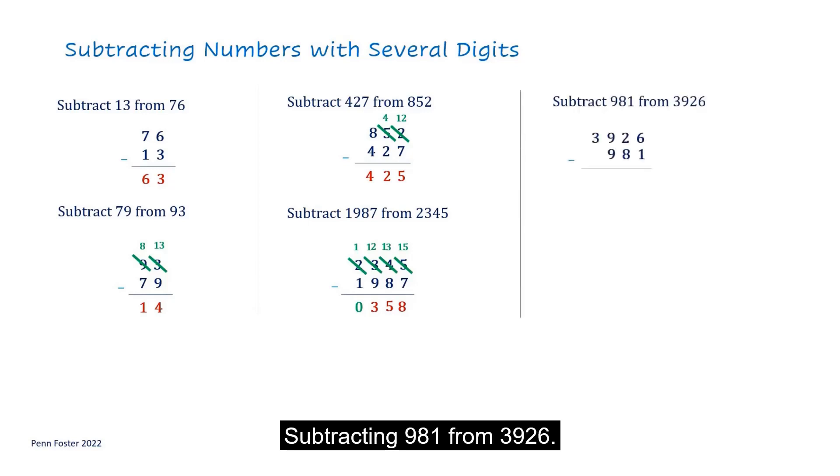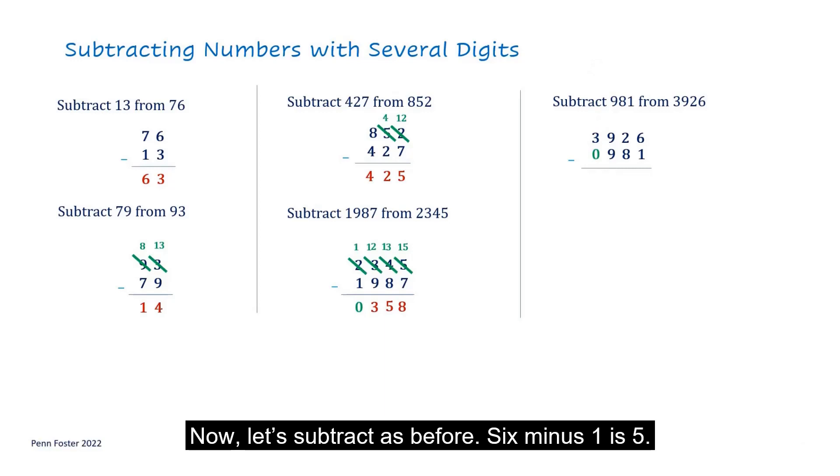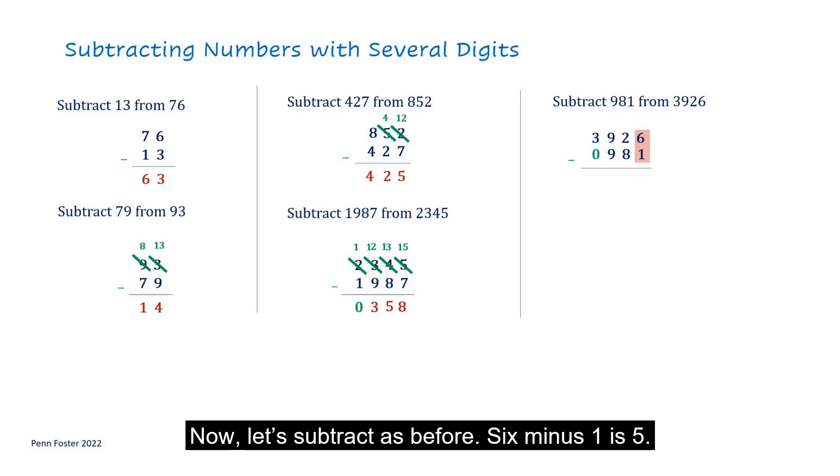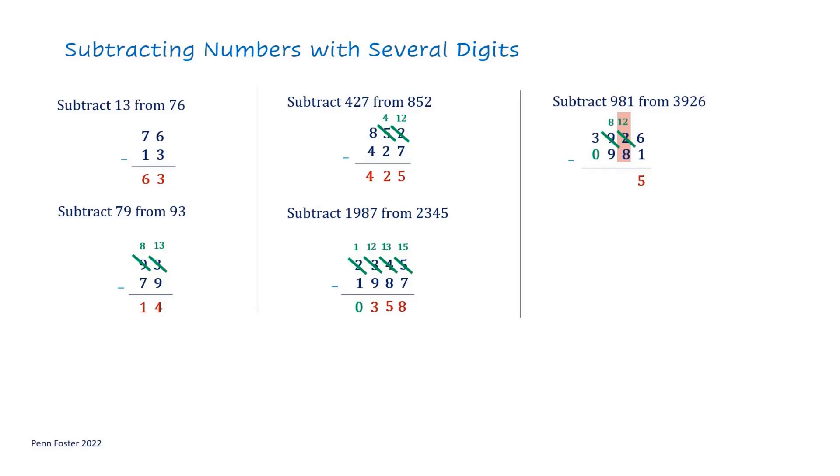Subtracting 981 from 3,926. Before starting with subtraction, put a 0 in front of the 9 as a placeholder. Now, let's subtract as before. 6 minus 1 is 5. 2 minus 8 is not possible. Borrowing from the 100's column results in 8 in the 100's column and 12 in the 10's column. 12 minus 8 is 4.